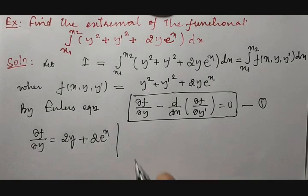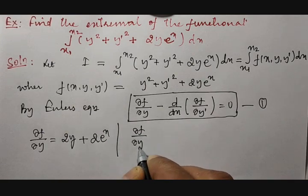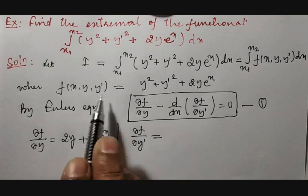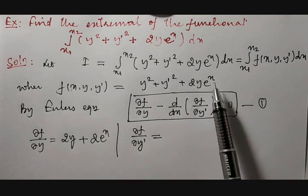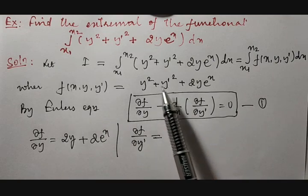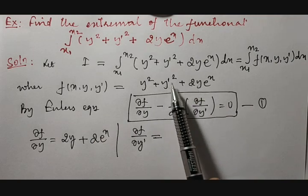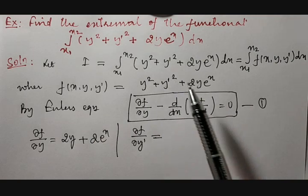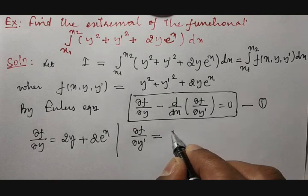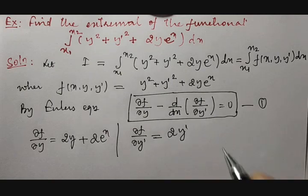Similarly, differentiating f with respect to y-dash: y-dash is the only relevant term. The first and third terms contain no y-dash; only the term y-dash squared is available. So its differentiation gives 2y-dash.